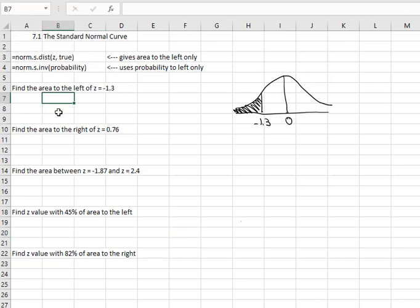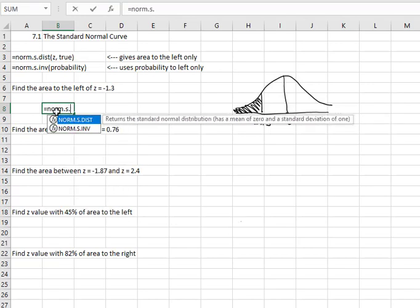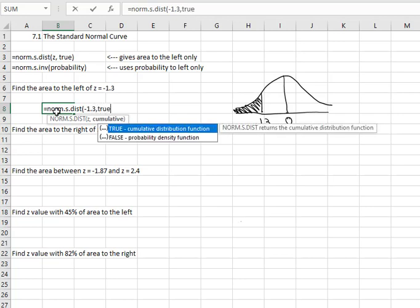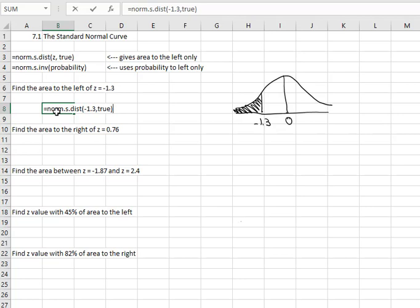Well that's exactly what the standard normal curve command in Excel is going to do. So we can just say equals norm.s.dist, open a parentheses, put the z value of negative 1.3 comma, and then we're always going to write true and close the parentheses. When I do that, I find out the probability or area to the left is 0.0968.